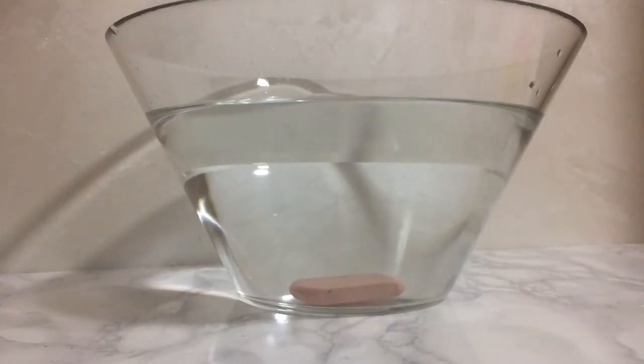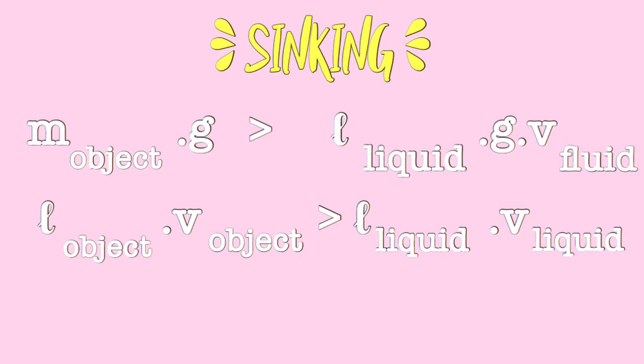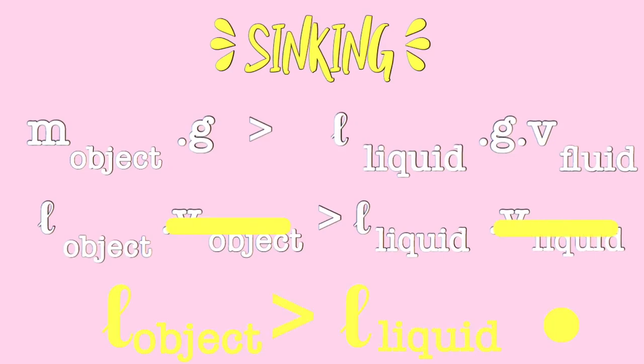If the object sinks, it means its weight is greater than the buoyant force. Simplifying the expression for a fully immersed body, we can conclude that if the density of an object is greater than the density of the fluid, then it will sink.